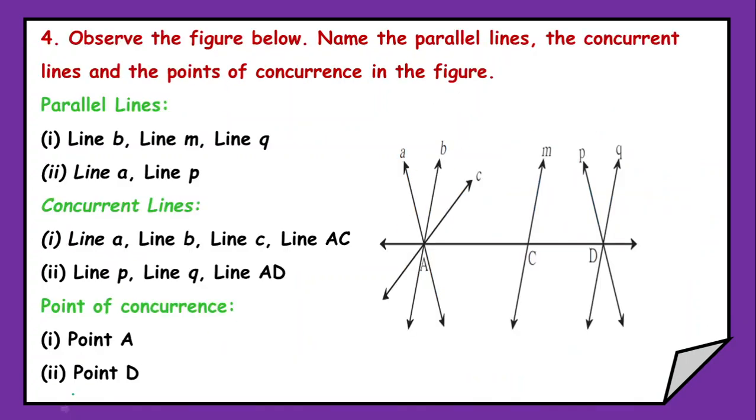Then we have the next question as from the given figure we have to write the name of parallel lines, concurrent lines and point of concurrence. Now firstly let's see what are the parallel lines. The lines which never intersect. So here we will be able to see line B, then line M and line Q.